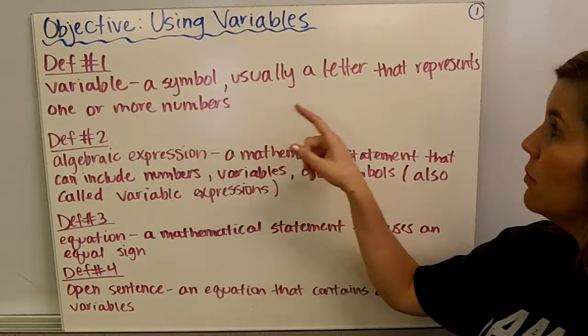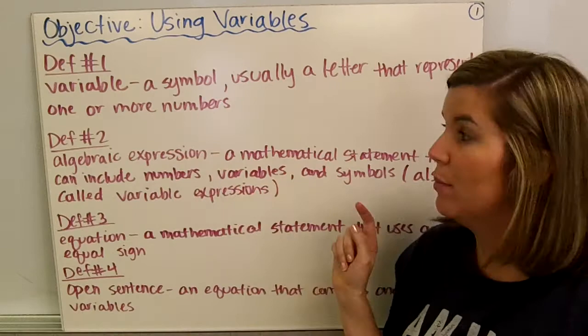Objective: using variables. Definition number one, a variable is a symbol, usually a letter like x or y, that represents one or more numbers.